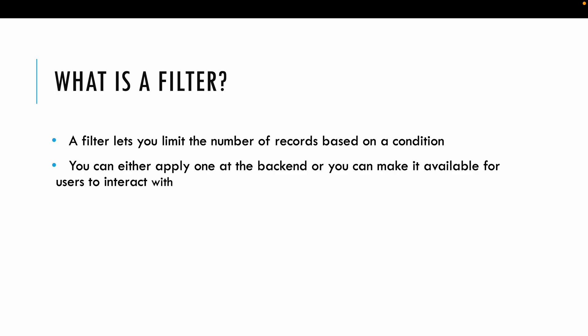When you want to limit the number of records, or if you want to give your users the ability to drill down to a specific level, then we make use of filters, and it is based on a specific condition. For example, if you want to show only records for the furniture category, you apply a condition on category where the value is furniture. It is also possible that you don't make these filters available for users, and just apply them at the development stage, versus giving users the ability to choose values from the filters.